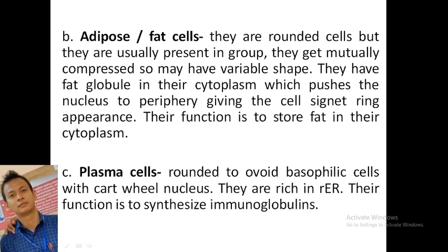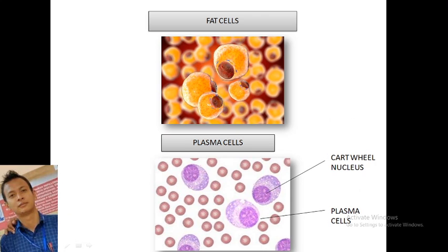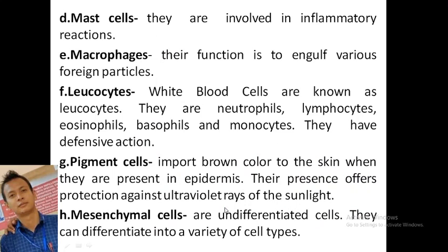Plasma cells are round to oval with basophilic cytoplasm and a cartwheel nucleus. They are rich in rough ER and their function is synthesis of immunoglobulins. You can see the cartwheel appearance of the nucleus in plasma cells. Mast cells are mostly involved in inflammatory reactions.